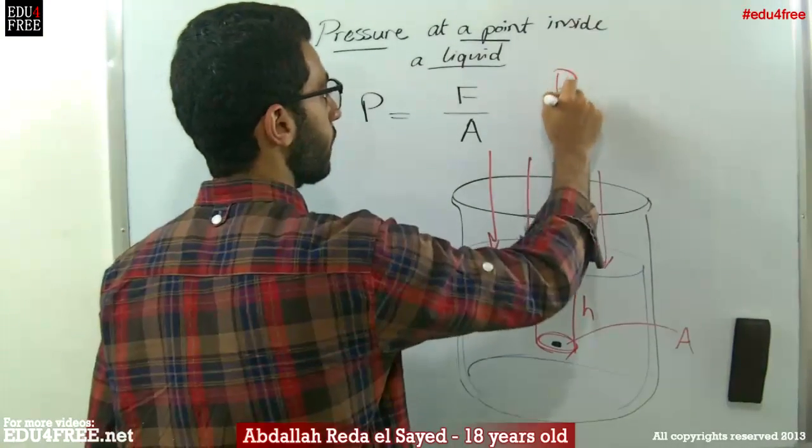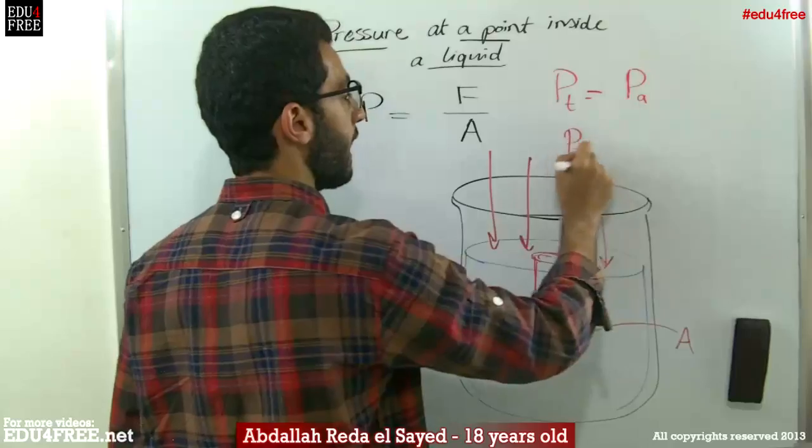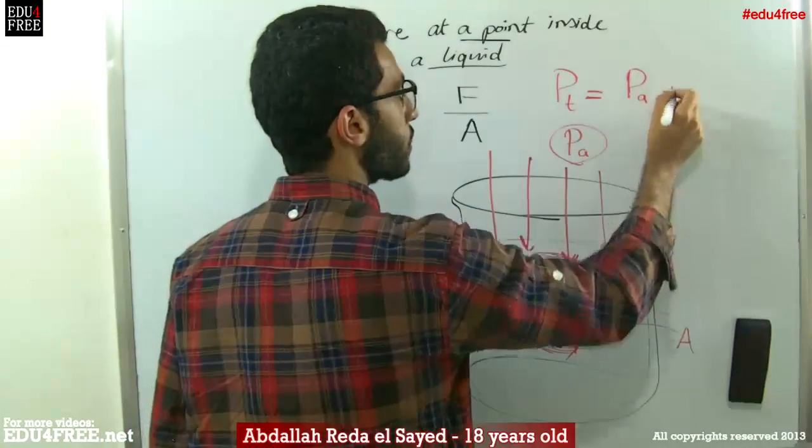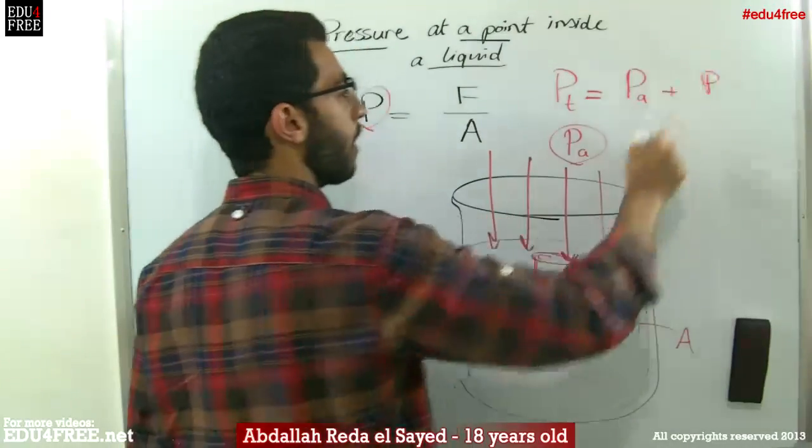we know that the total pressure equals the atmospheric pressure plus the pressure exerted by the liquid, which is P, that we are going to calculate.